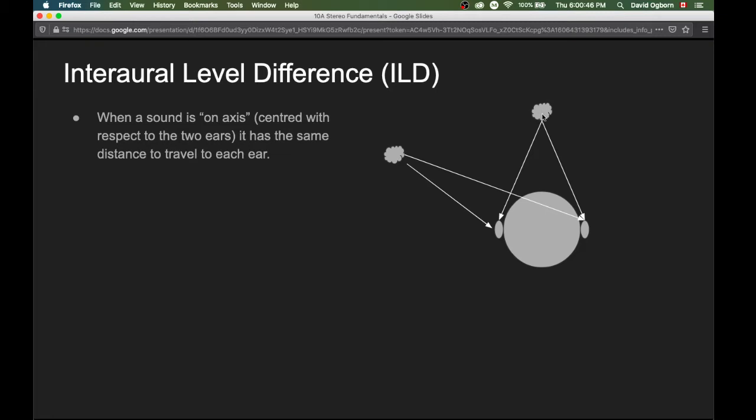Imagine that this fluff ball over here is a sound source and this is a listener and this is their two ears. We draw a line from that centered sound source to both ears and we can see that these lines are both the same length.